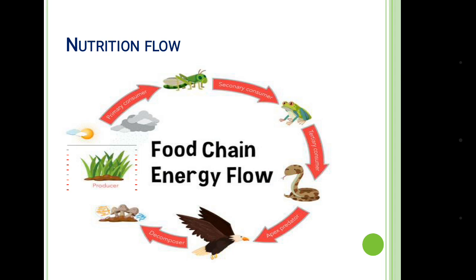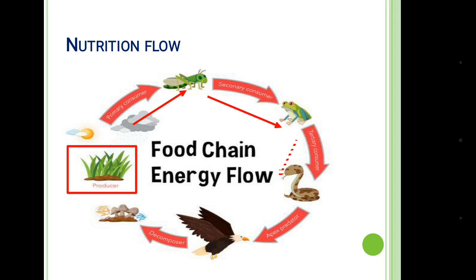So we can see a cycle of nutrition flow in the food chain. The cycle of nutrition flow goes from the producer to the consumer, again to another level of consumer, and finally decomposition occurs, after which nutrients in the environment are again produced to be utilized by the producers. So we can say nutrition flow is cyclic.